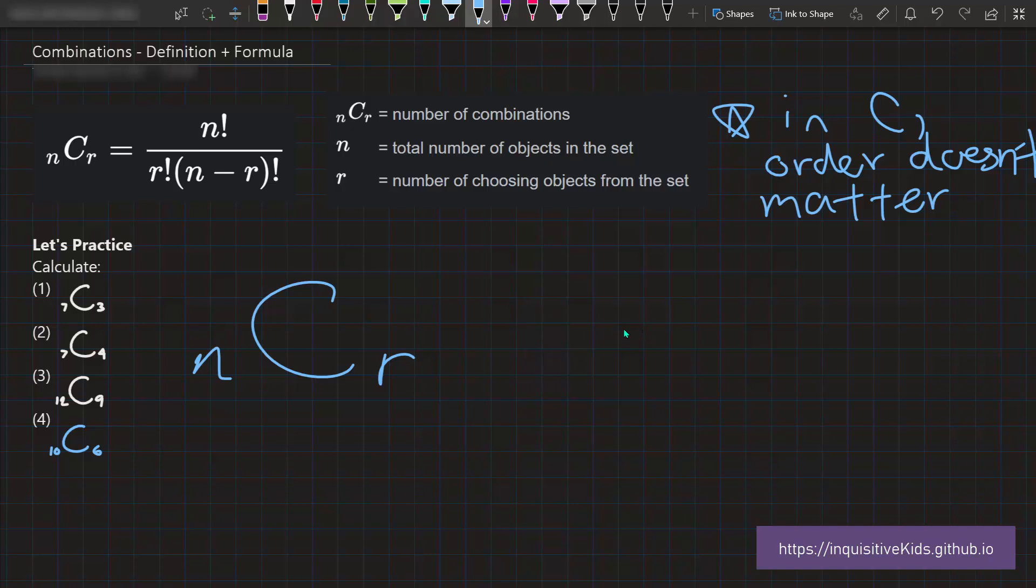Going back to our gumballs example from earlier, the n in that case would be nine, since there is a total of nine gumballs in that jar. And since we're taking two gumballs from that jar, our r would be two, so that problem would be set up as C(9,2). Now let's use this formula and solve some simple combinations exercises.